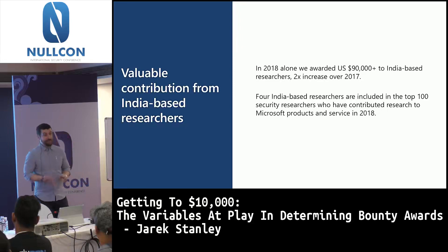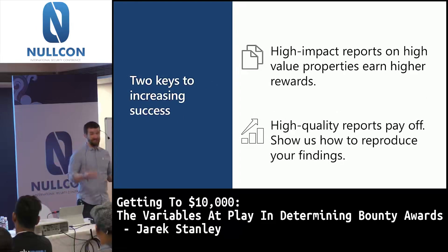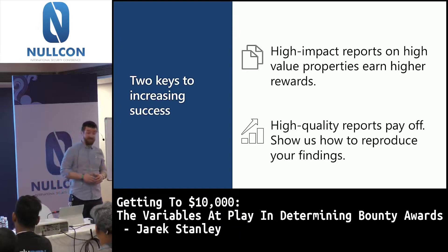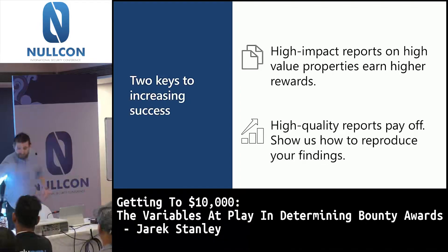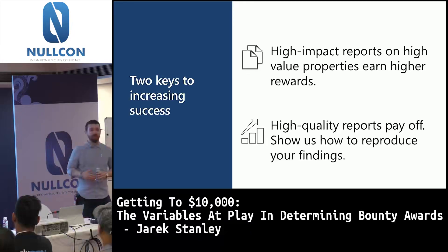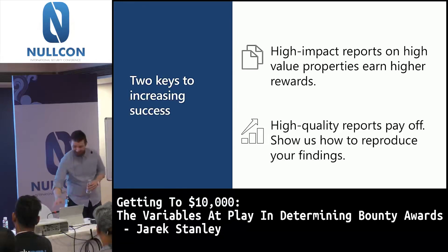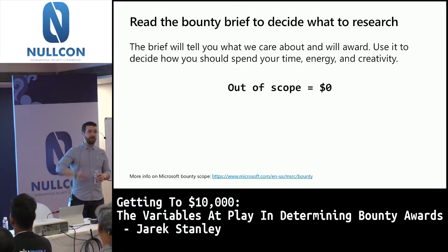So how do you earn those bounties? How do you get on that list? There are two key takeaways. First, submitting high-impact reports on high-priority products earns higher rewards. Second, by improving the quality and completeness of your reports, you can also improve the bounty you'll earn per report. Show us how to reproduce your findings, and I'll show you a bigger bounty.